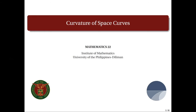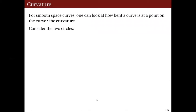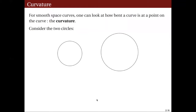To begin, let us consider the following illustration. Suppose we have two circles of different radii. Which circle do you think is more bent? To help you answer the question, let us take an arc on each of the circles with the same length. So you see here the arc on the smaller circle, which is of the same size as the arc on this larger circle. Which arc is more bent?